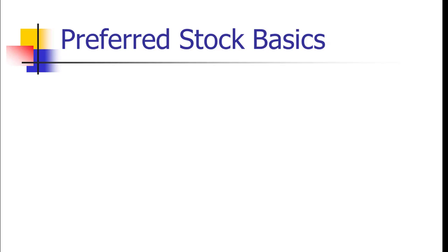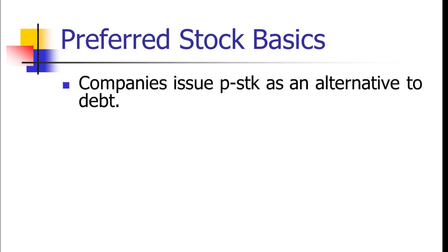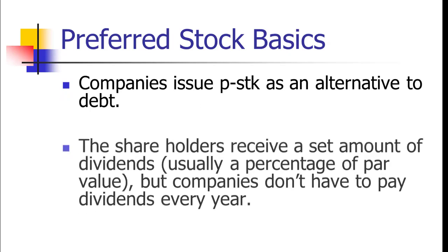Now it's time to turn our attention to the other major category of stock, and that is preferred stock. Preferred stock is very different than common stock. Common stock is sold to owners who have a specific ownership share in the company — they get voting rights relative to that ownership share and they get profits equal to that ownership share. Preferred stock is different; it's an alternative to debt. They get no ownership stake in the company. What they get instead is a set dividend. If the company liquidates, we pay off the debt holders first, then the preferred stockholders second, and common stockholders last.